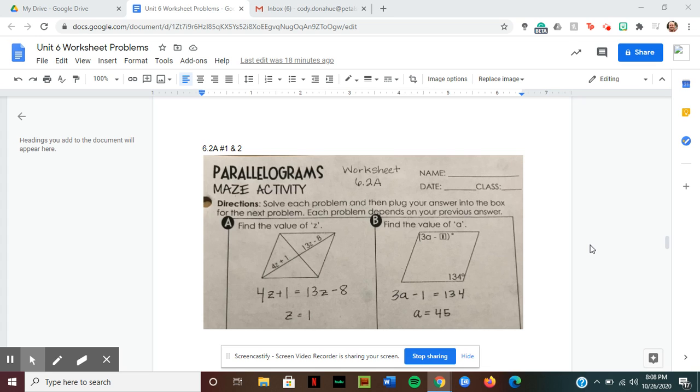Section 6.2a, talking about parallelograms. If you remember, the definition for a parallelogram is a four-sided polygon or quadrilateral that has two sets of parallel lines.